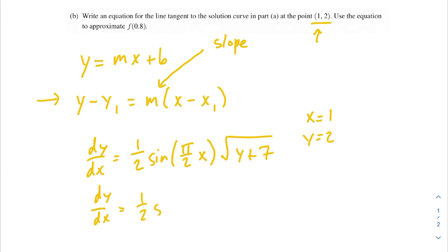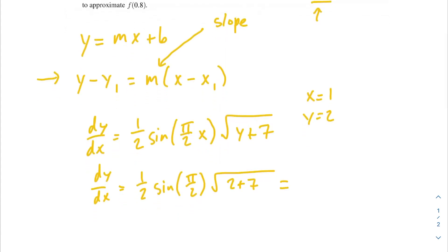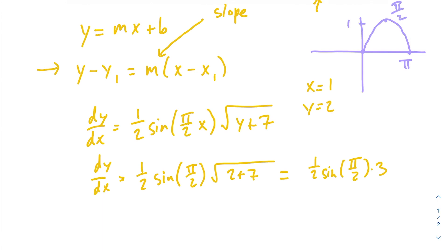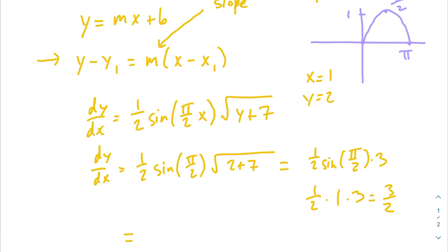We have our derivative defined: dy over dx is equal to one half sine of pi over two times x times the square root of y plus seven. We plug in x equals 1 and y equals 2. So dy over dx is equal to one half sine of pi over 2 times the square root of 2 plus 7. This is a non-calculator problem. Under the square root we get 9 — very convenient. So we have one half sine of pi over 2 times the square root of 9, which is 3. Sine of pi over 2 is 1, so it's one half times 1 times 3, giving us a slope of 3 over 2.